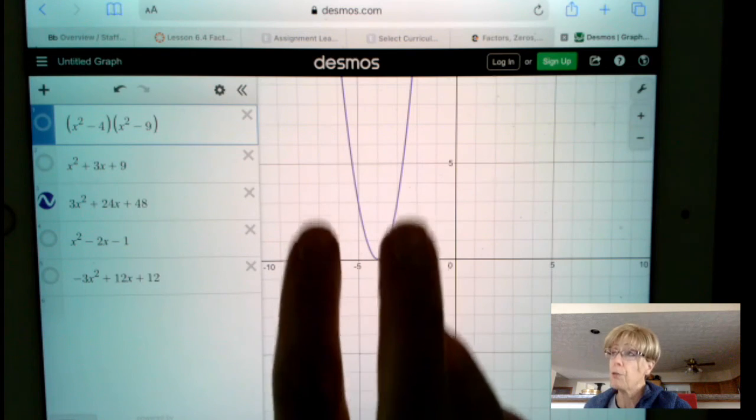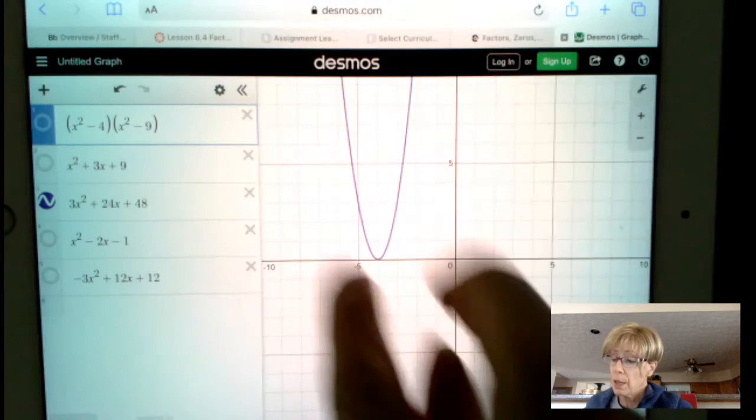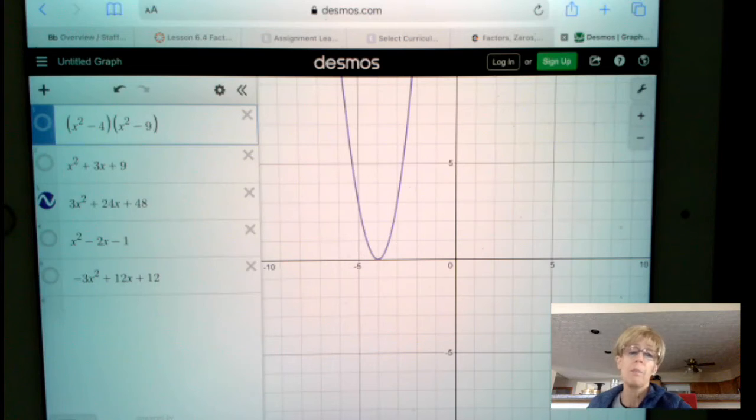And notice the quadratic form. X squared is that u-shaped curve, which is quadratic. I do think that that is the answer.